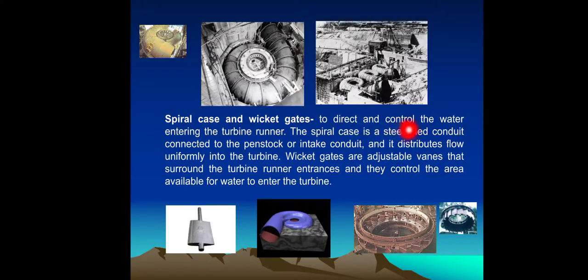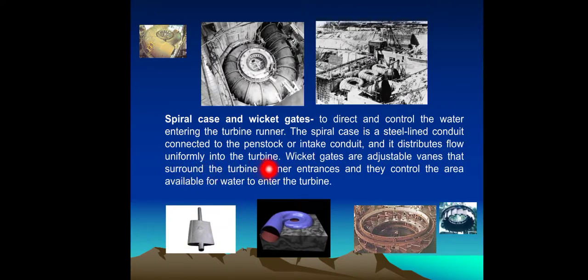Spiral Case and Wicket Gates: To direct and control the water entering the turbine runner, the spiral case is a steel-lined conduit connected to the penstock or intake conduit, and it distributes flow uniformly into the turbine. Wicket gates are adjustable vanes that surround the turbine runner entrance, and they control the area available for water to enter the turbine.